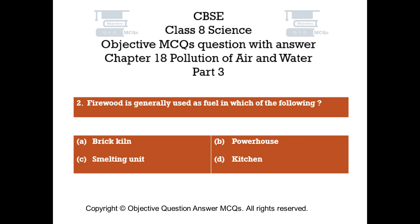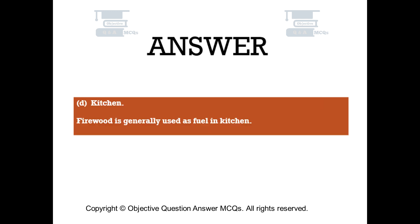Question number 2: Firewood is generally used as fuel in which of the following — Option A: brick kiln, Option B: powerhouse, Option C: smelting unit, Option D: kitchen. The right answer is Option D: kitchen. Firewood is generally used as fuel in the kitchen.